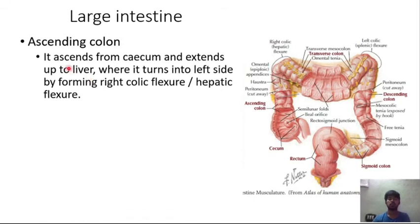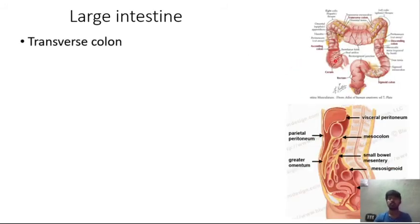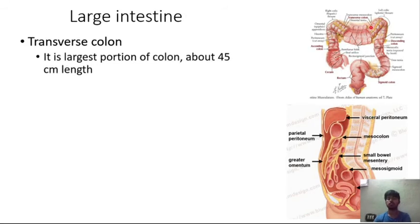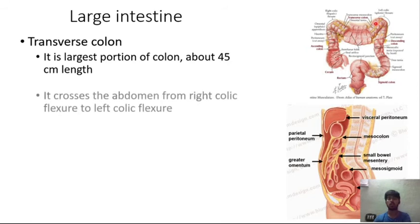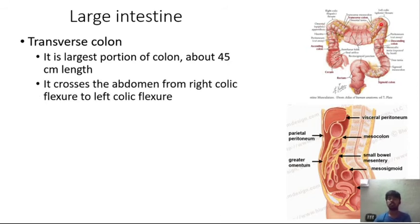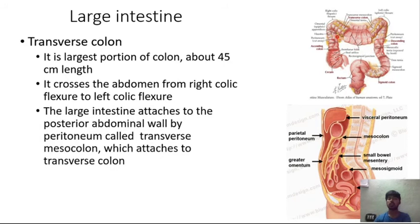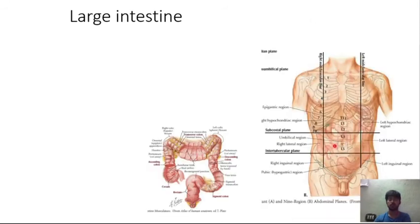The ascending colon ascends from the cecum up to the liver, where it turns into the transverse colon at the right colic flexure (hepatic flexure). The transverse colon is the largest portion, about 45 centimeters long, crossing from the right colic flexure to the left colic flexure. It is attached to the posterior abdominal wall by the transverse mesocolon.